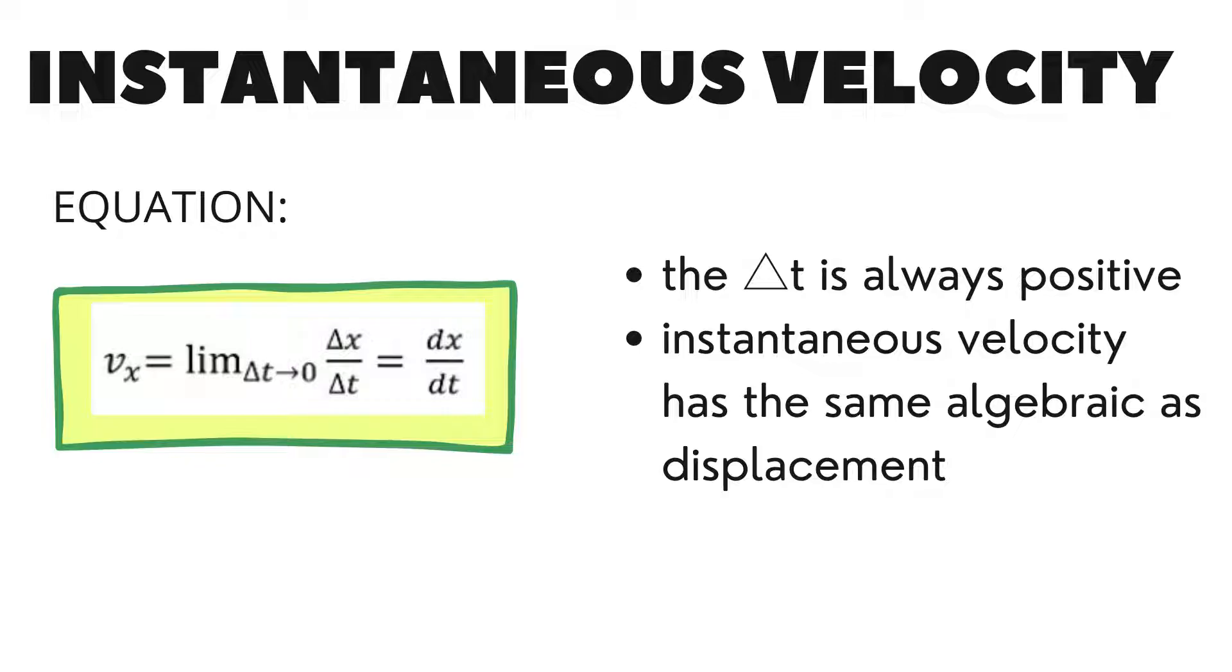The instantaneous velocity is the limit of the average velocity as the time interval approaches to zero. It equals the instantaneous rate of the change of position with time. The delta t is always positive. Instantaneous velocity has the same algebraic as displacement.